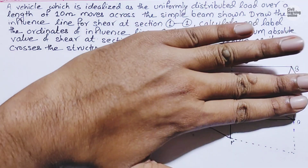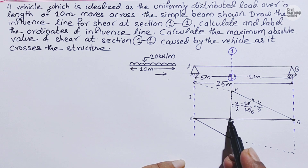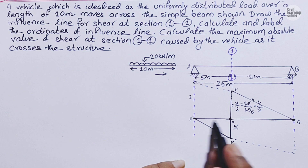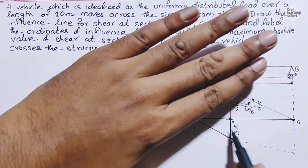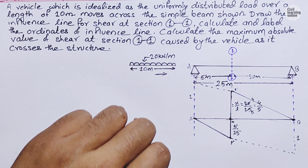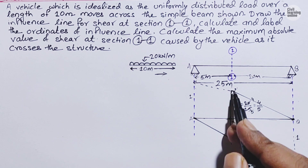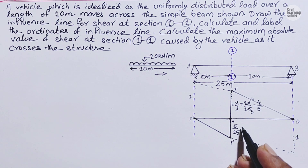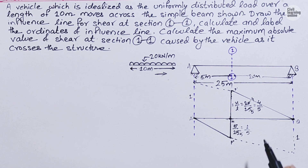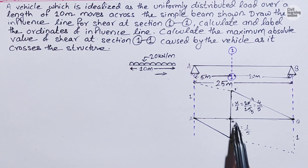Now cover the upper triangle. The X value increases from 0 to 5 meters on the right side. Using the same formula, X upon L equals 5 upon 25, giving us 1 upon 5. The full triangle (reaction at B or A) would give ordinate 1 at the far end, but for shear we only use the relevant portion. So our two ordinates are 4/5 and 1/5, completing the first question.